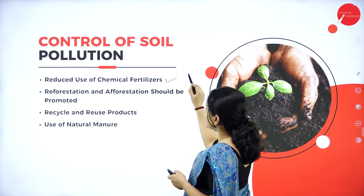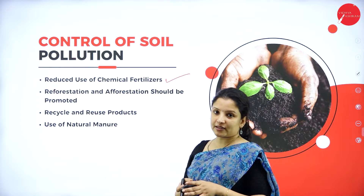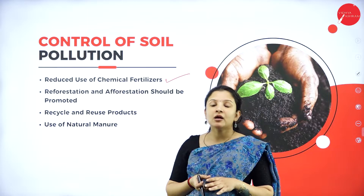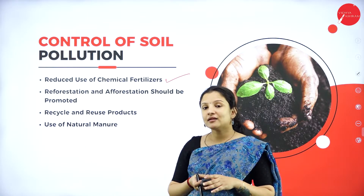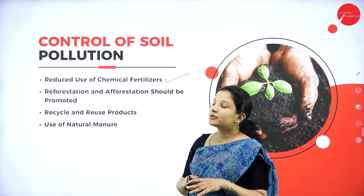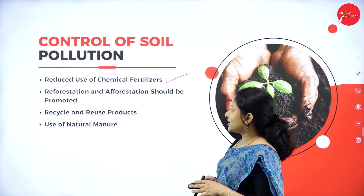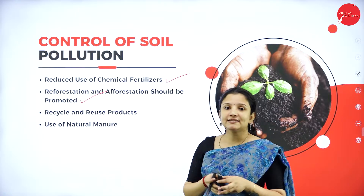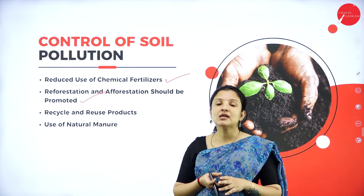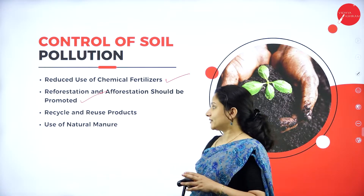The first control measure is reducing the use of chemical fertilizers by switching over to organic farming. Organic farming may take more time to show results compared to chemical fertilizers, but it is better for the environment. Next is reforestation and afforestation — wherever trees have been cut down, growing new trees can be undertaken, as trees help in maintaining the quality of the soil.